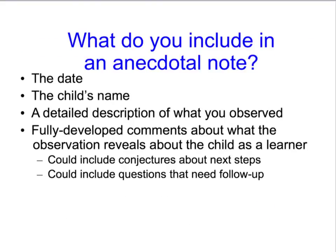Generally an anecdotal note includes the date, the child's name, and a detailed description of what you observed. If the context was important, include that. If other kids involved played a role, include that. Then focus on providing fully developed information about what the observation reveals about the student as a learner. The note might also include conjectures about next steps or questions that need to be answered, but the focus is always on the date, the name, what happened, and why it matters.